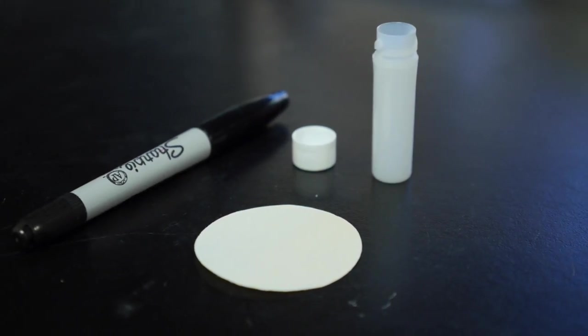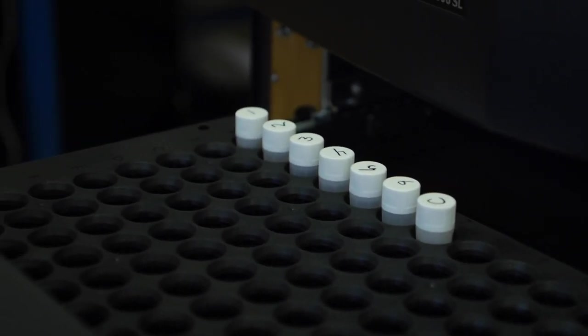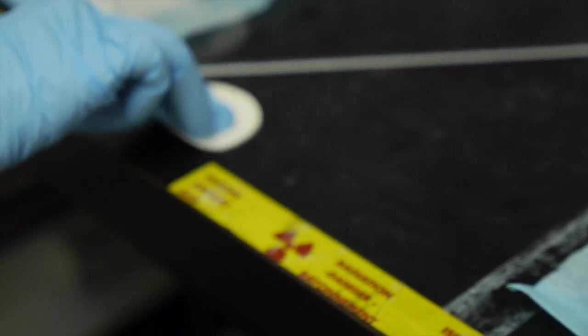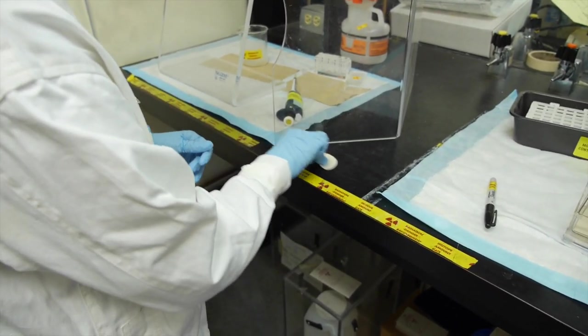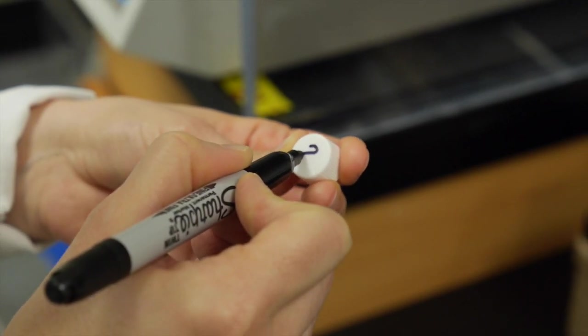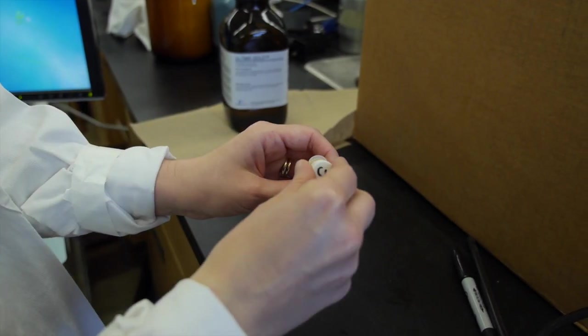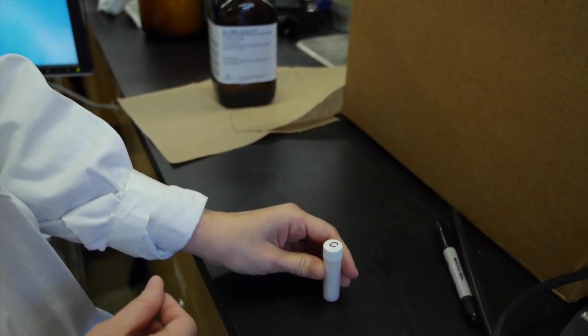Ensure that your vials are the appropriate size to fit into the liquid scintillation counter. To start, take a piece of filter paper and wipe an area of about 100 square centimeters or approximately 4 by 4 inches. Place the paper into the vial and label the vial cap with a sample number. Place a clean piece of filter paper into a separate vial and label this as your negative control.